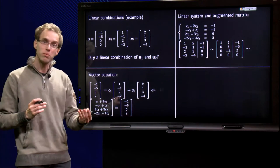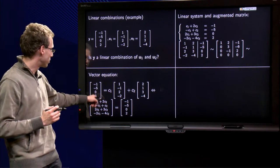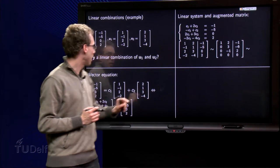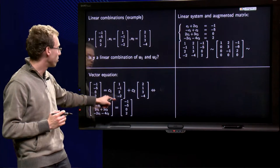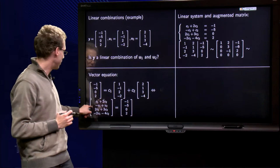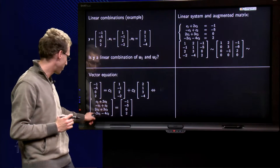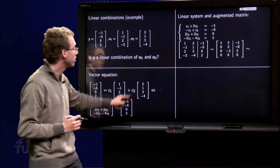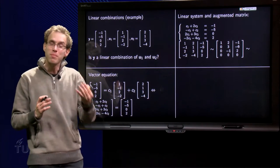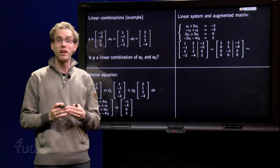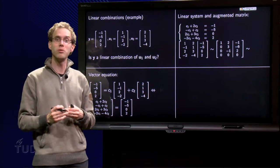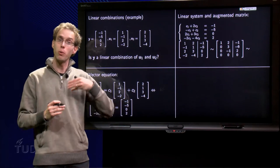But if all components have to be the same, that leads to the equation c1 plus c2 equals minus 1, but we also need minus c1 plus c2 equals minus 5, and we need 2 c1 plus 3 c2 equals 0, and we need at the same time minus 2 c1 minus 4 c2 equals 2. But that means that I have four linear equations and two unknowns, c1 and c2, so we have a linear system.